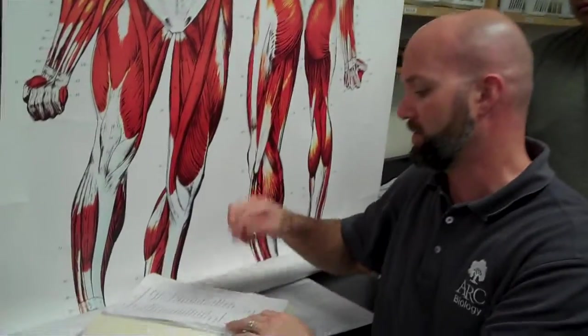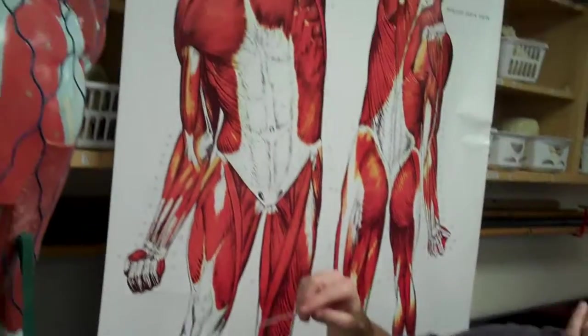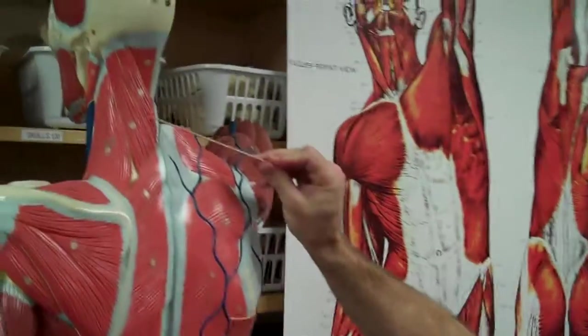So 80 splenius capitis, 81 splenius cervicus. Cervicus or cervices, so these are the two splenius muscles.